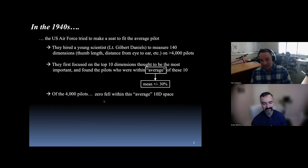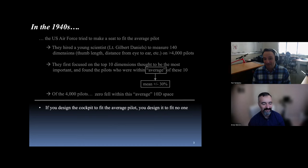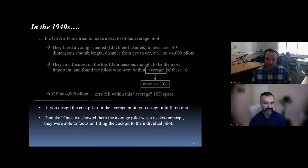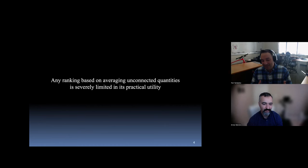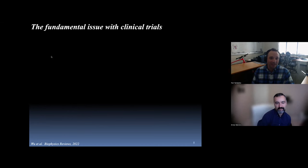And what they decided was that there was going to be a list of these 10 top dimensions that they figured were going to be the most important in determining how to build a cockpit for these pilots. And what they did is they tried to find the pilots that were within this average of this 10-dimensional space here. And this average was also defined in a very liberal way. It was the mean plus or minus 30%. So this is a really big average. And the question is, of those 4,000 pilots, how many fit in that average 10-dimensional space?